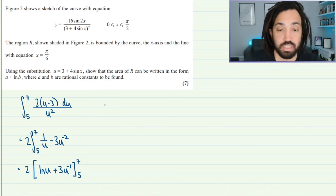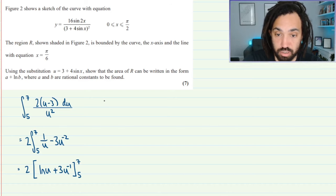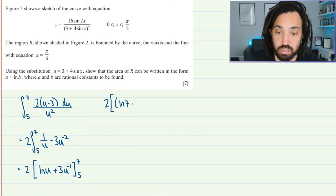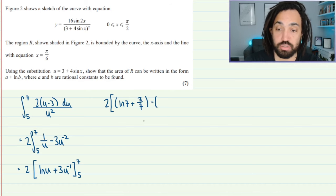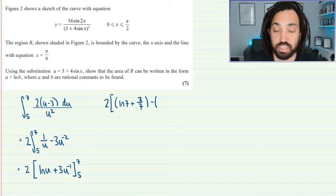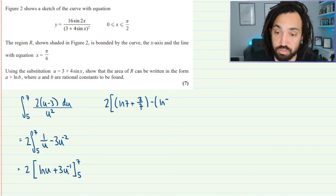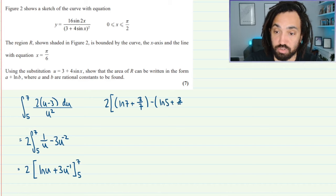Right now it's time to sub in the limits so I'll keep the 2 outside, I'll keep the square bracket here and I'll do a smaller bracket and I'll sub in 7. So that gives me ln 7 and this will be 7 to the minus 1 is 1 over 7 so times by 3 is 3 over 7 and then minus the lower limit and now I'm subbing in 5 so I get ln 5 and that's going to be plus 3 over 5.